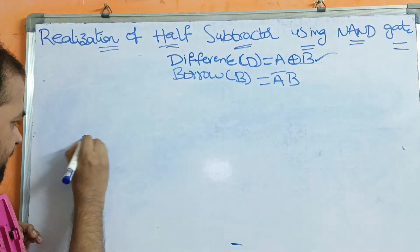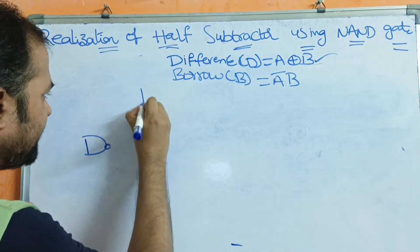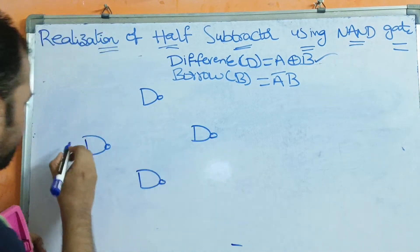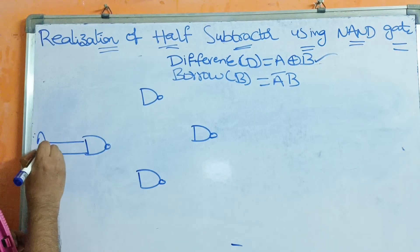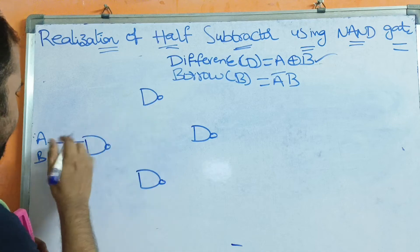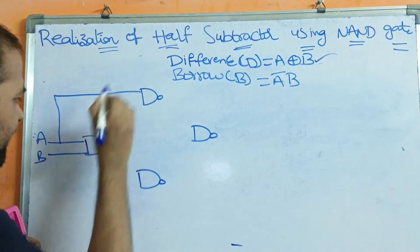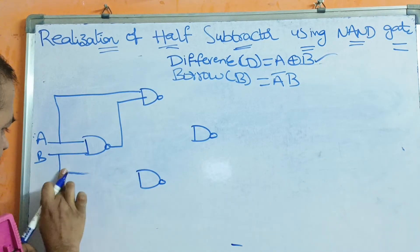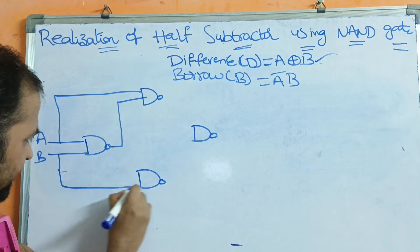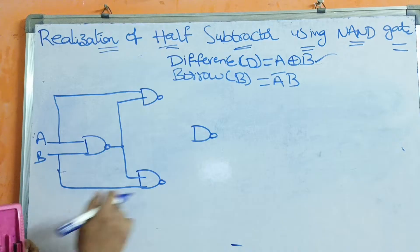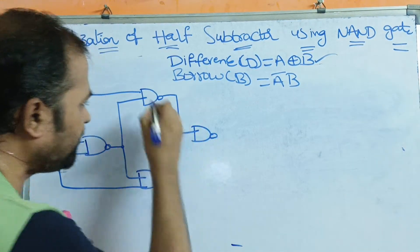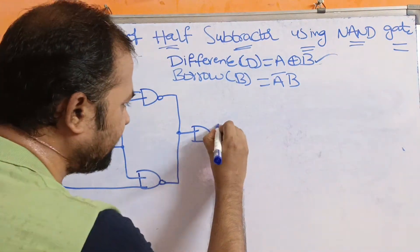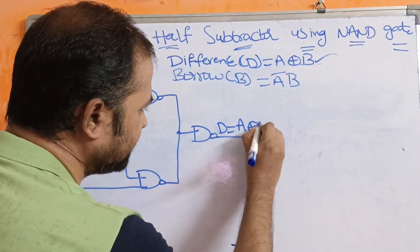The first NAND gate receives inputs A and B. The second NAND gate receives input from A as well as the output of the first NAND gate. The third NAND gate receives input from B as well as the output of the first NAND gate. The fourth NAND gate receives input from the output of the second NAND gate and the output of the third NAND gate. This final NAND gate produces the difference, that is A XOR B.